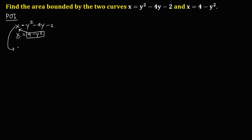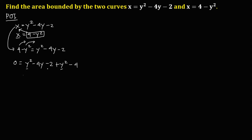Since in the second equation x is equal to 4 minus y squared, substitute this into the first equation. So this becomes: 4 minus y squared equals y squared minus 4y minus 2. Then equate this to 0 by transposing everything to the right. So we have 0 equals y squared minus 4y minus 2 plus y squared minus 4, giving us 2y squared minus 4y minus 6 equals 0.